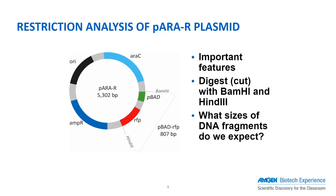Let's review these components. Shown in black is the ori, or the origin of replication site. This is the place where DNA replication begins, enabling a plasmid to reproduce itself, as it must, to survive within cells. Plasmid replication is usually different from host chromosomal DNA replication, but shares the same machinery inside the cell to make an additional copy.